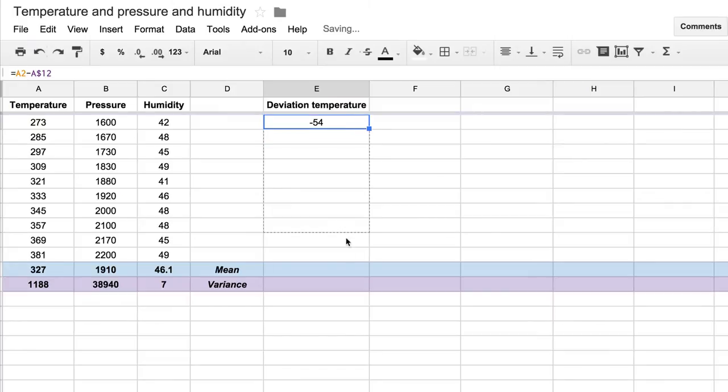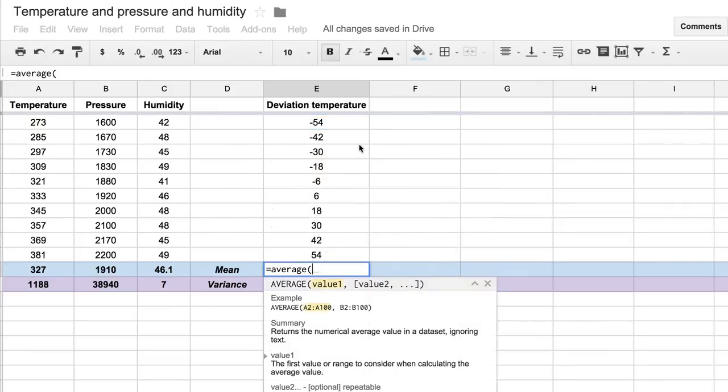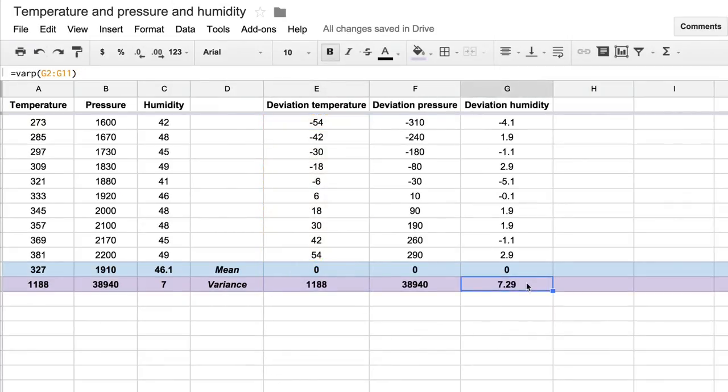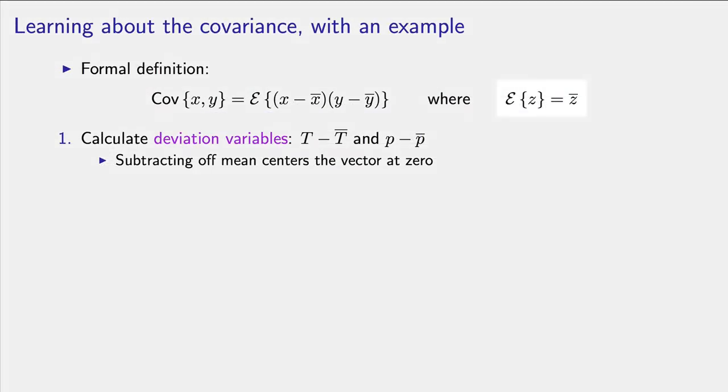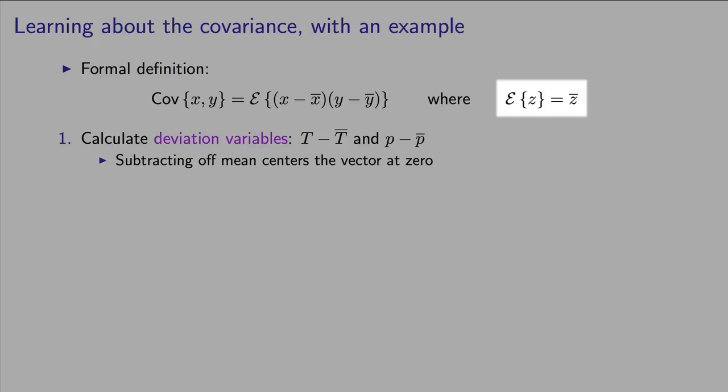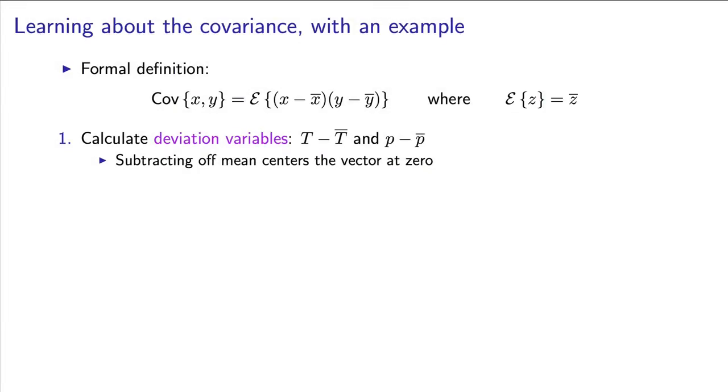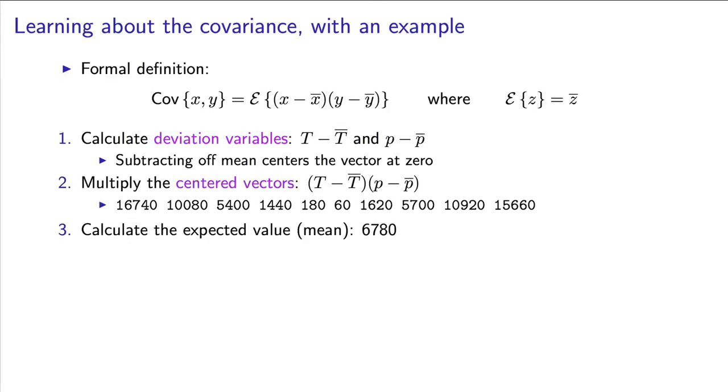Let's apply this to the gas cylinder data. If we mean-center the temperature and mean-center the pressure, we get two new columns of numbers. The other new thing is the expectation operator. The generic definition of the expectation operator is to calculate the average of the population variable inside it. So then, the formal definition for covariance simply says to multiply these two deviation columns with each other, and then the expectation operator implies to calculate the mean of those multiplied numbers.